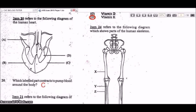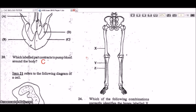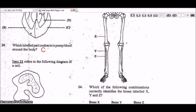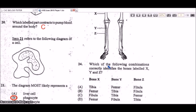Item 24 refers to a diagram of the lower human skeleton. X is pointing at the femur (thigh bone), Y is pointing at the tibia (shin bone), and Z is pointing at the fibula (the smaller lower leg bone). The correct combination is B: femur for X, tibia for Y, and fibula for Z.